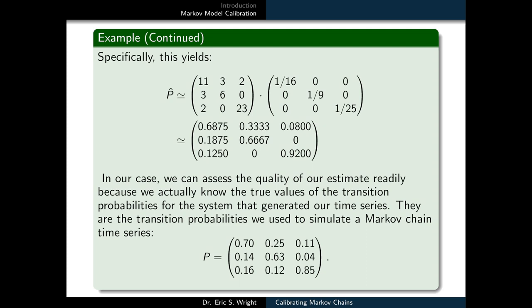P23 is .04, P31 is .16, P32 is .12, and P33 is .85.